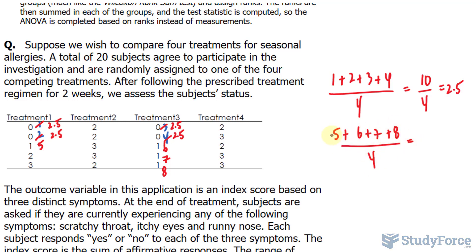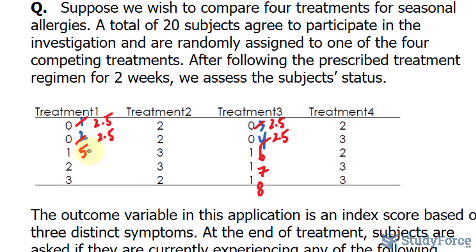7 plus 8 is 15, plus 5 is 20, plus 6 is 26. Divided by 4 should give you 6.5. So I'll write down a rank of 6.5, 6.5, 6.5, and 6.5.